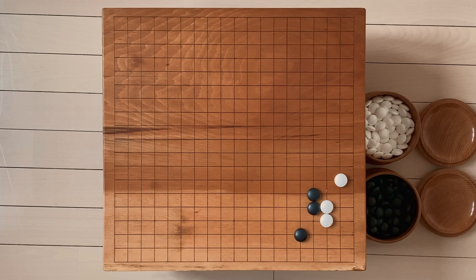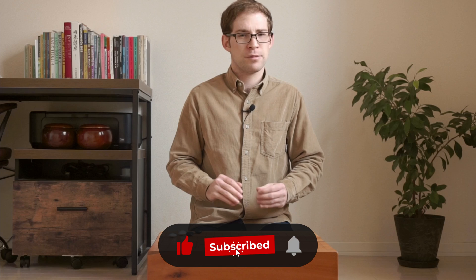Very simple, very straightforward. Black presses, white extends, black extends, and then white makes a jump of some kind. So that's the most simple, most basic joseki for the 3-4.